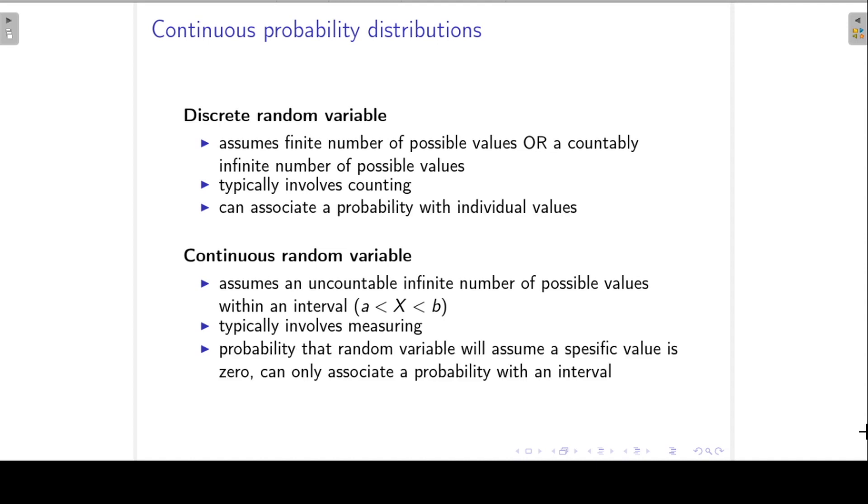For discrete random variables, we associate the probability with the individual values. For continuous random variables, the probability that a random variable will assume a specific value is zero. We can only associate the probability with an interval.